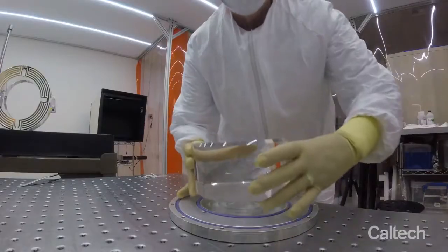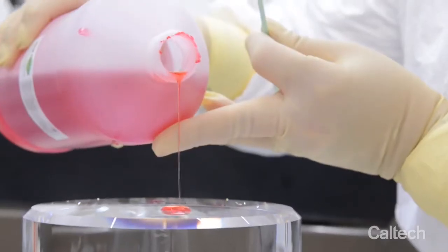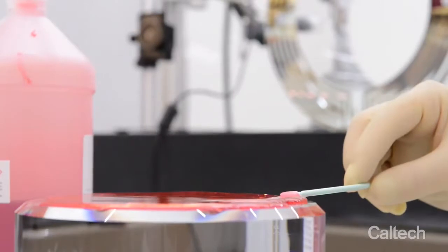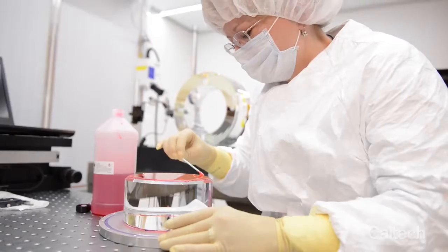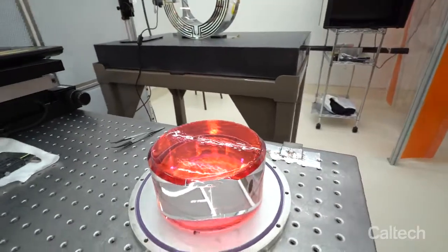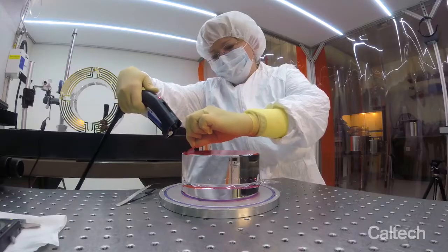We clean the optics carefully before examining them. Our cleaning process involves a solvent-based polymer liquid called first contact. Once the layer dries, it leaves a pristine mirror surface.